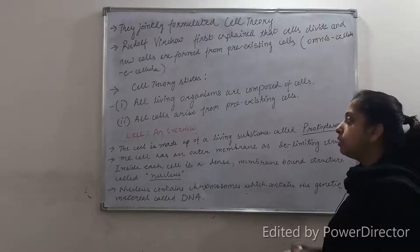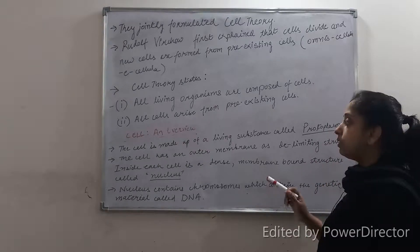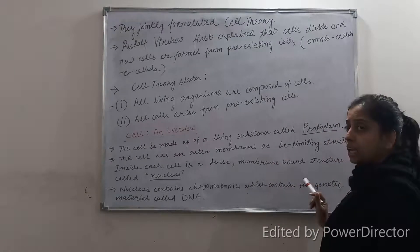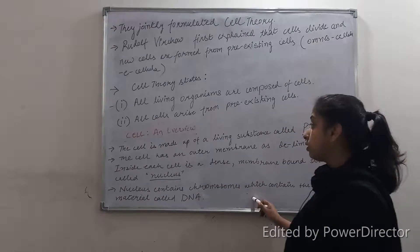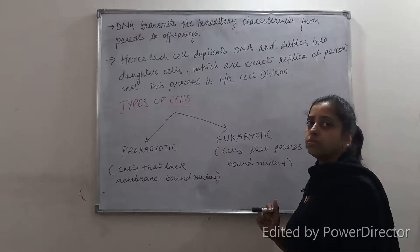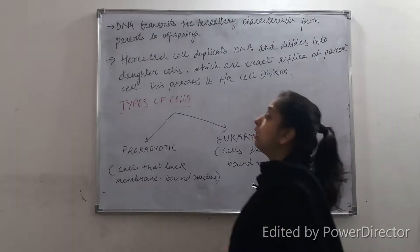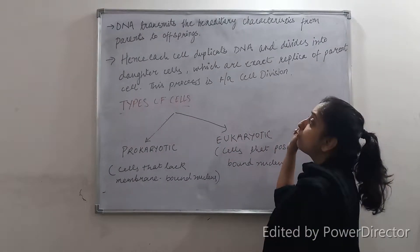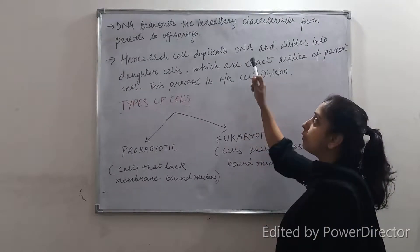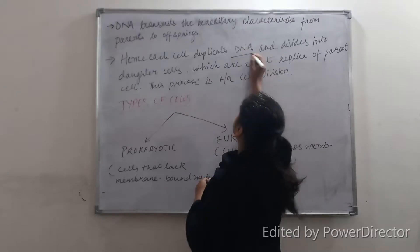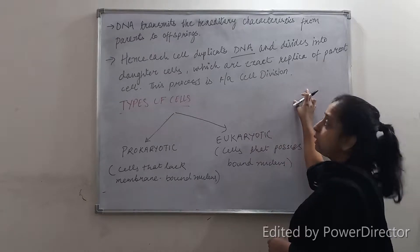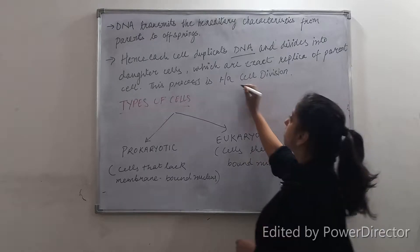Now, cell — an overview. The cell is made up of a living substance called protoplasm. The cell has an outer membrane as the delimiting structure. Inside each cell is a dense spherical membrane-bound structure called the nucleus. The nucleus contains chromosomes which contain the genetic material called DNA. DNA helps in cell division and transmits hereditary characteristics from parents to offspring. This forms the basis of life. Each cell duplicates its genetic material, the DNA, and this DNA divides into daughter cells which are exact replicas or copies of the parent cell. This process is known as cell division.